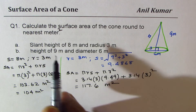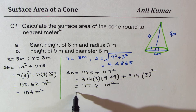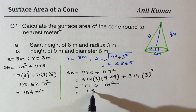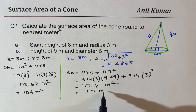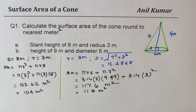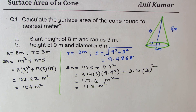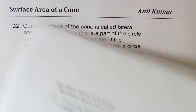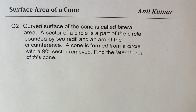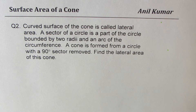Rounded to the nearest square meter, that is 118 square meters. At times you may have to find the slant height first, as we did here, using the Pythagorean theorem. The steps should be absolutely clear.